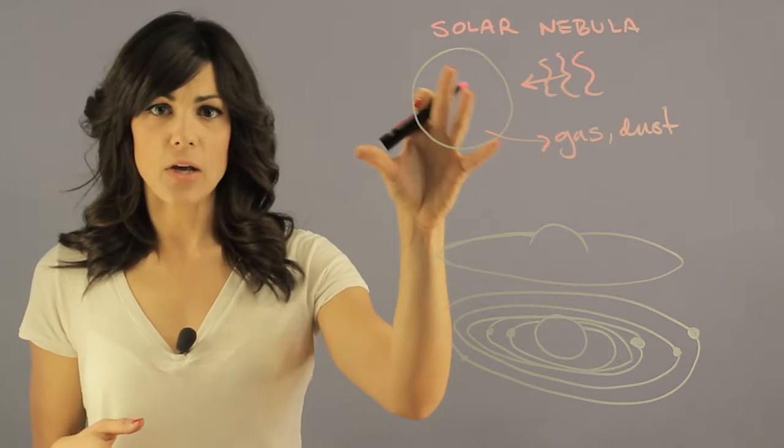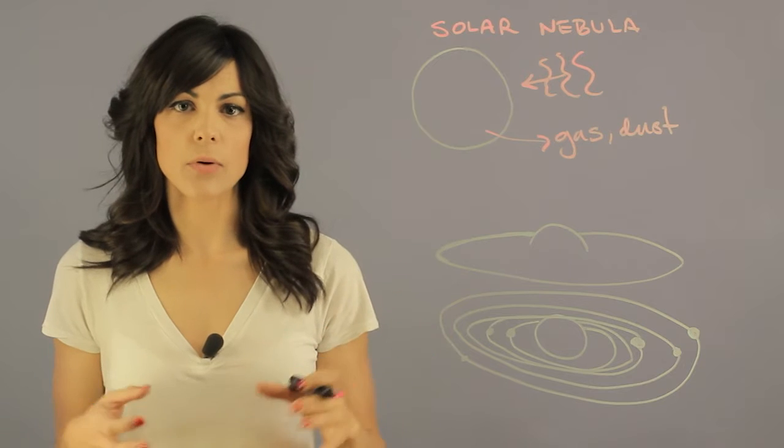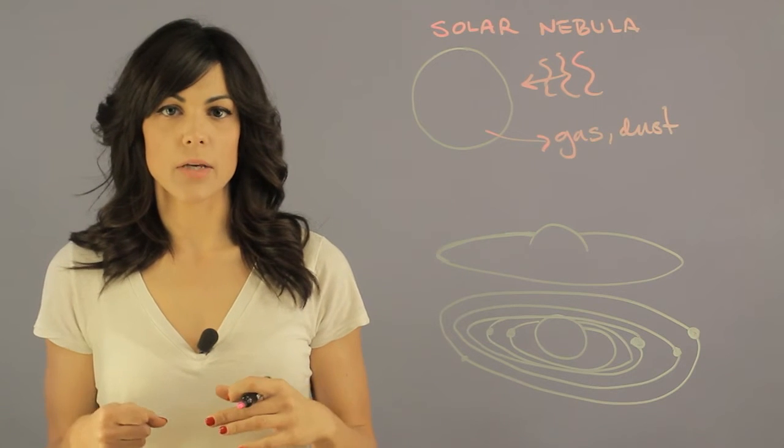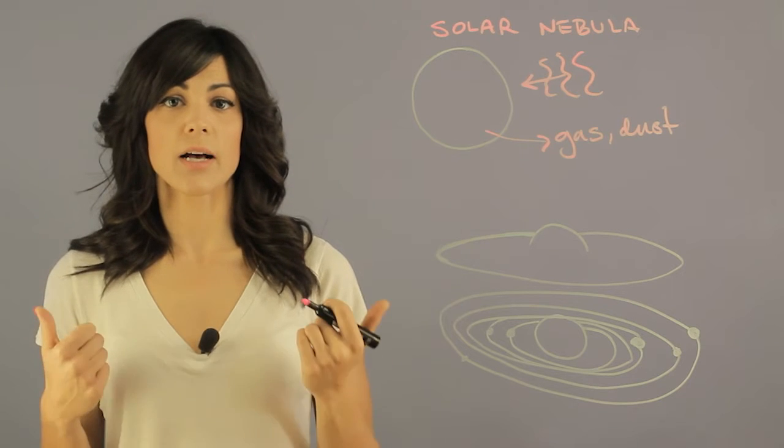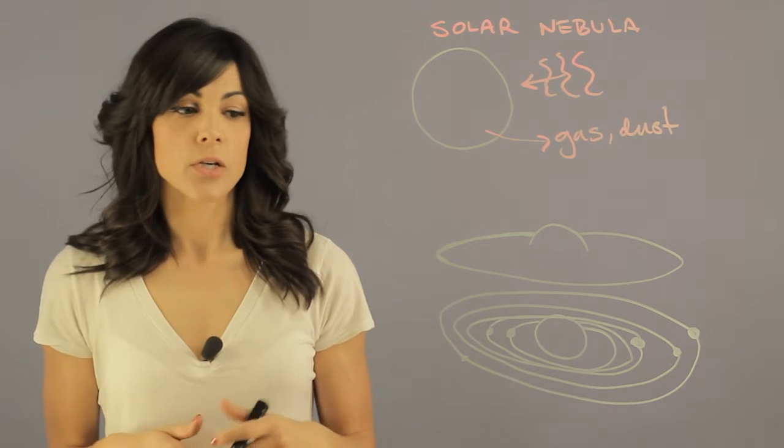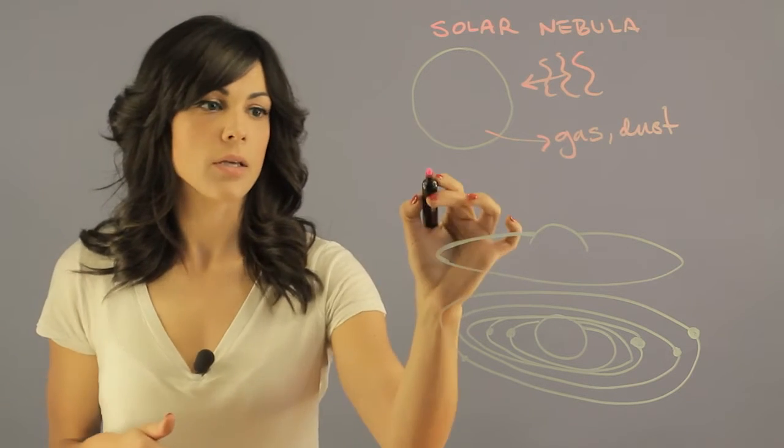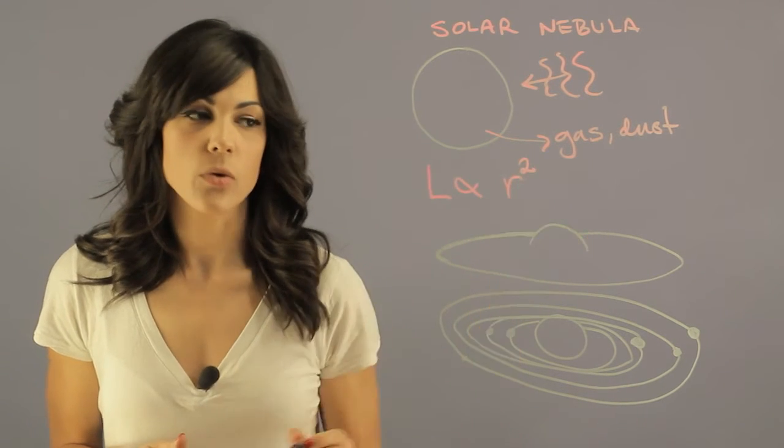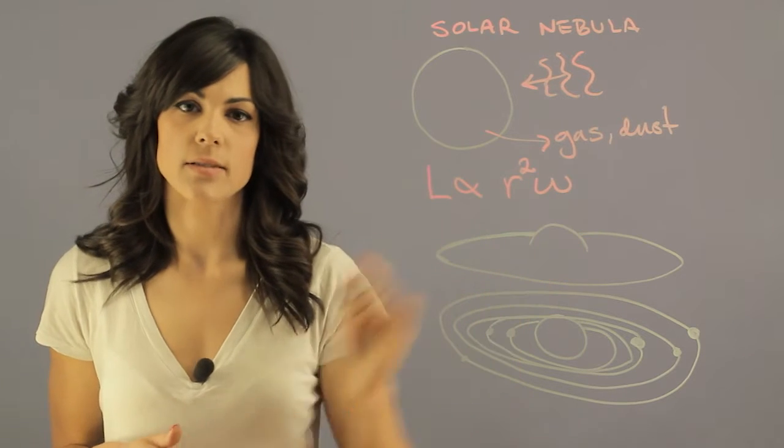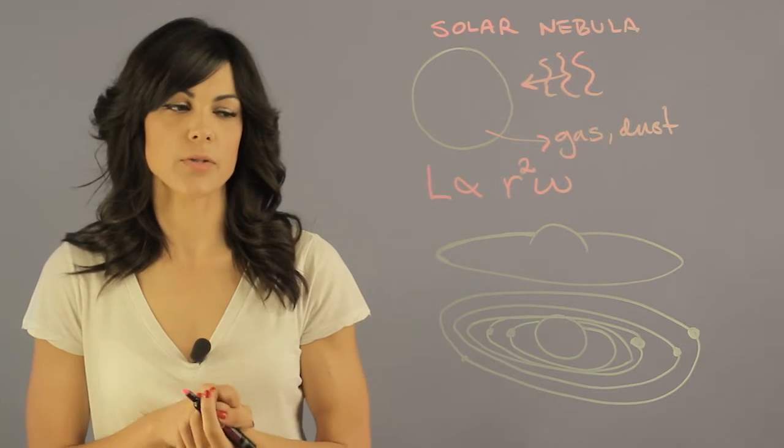So this very large cloud that is now gravitationally unstable is going to start compensating for this gravitational instability, and it's going to start conserving its momentum. So the angular momentum, L, generally goes as proportional to the radius squared and how fast it's spinning, like the period it's spinning.